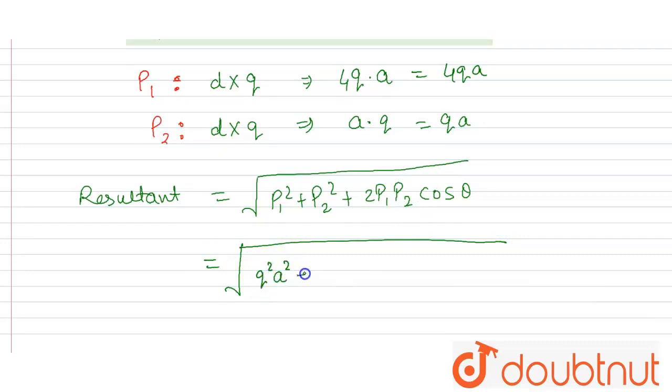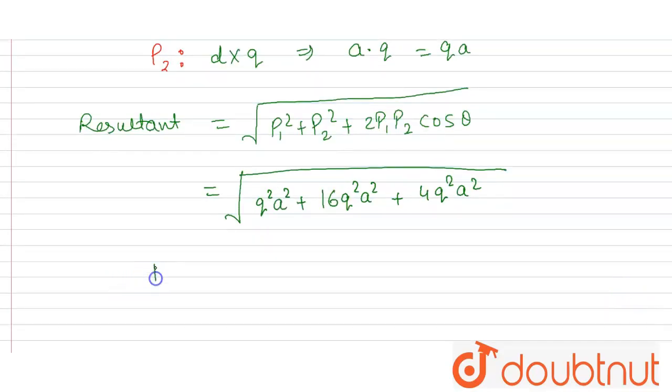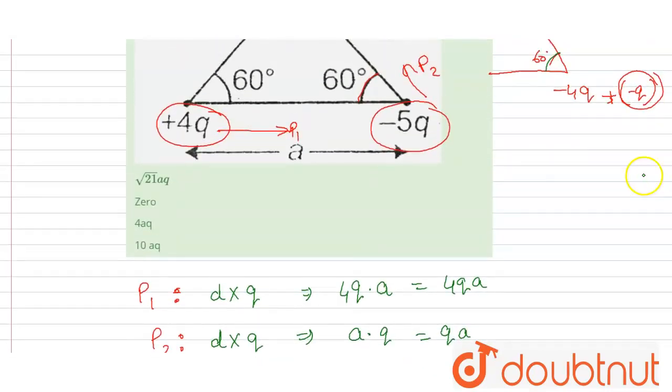Then it will become q squared a squared plus 16 q squared a squared plus it will become 4 q squared a squared. Now if we solve this then the resultant p will be equal to under root 21 qa. So this is the resultant dipole moment, so the correct option will be first one. Thank you.